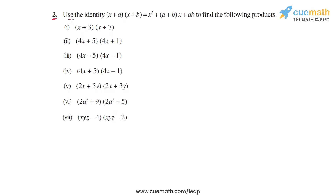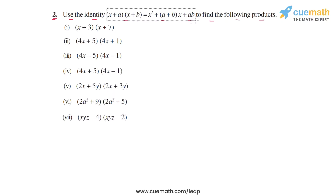In question 2, we have to use the identity (x+a)(x+b) = x² + (a+b)x + ab to find each of the following seven products. Let's observe this identity: when you have a product of the form (x+a)(x+b), which is the product of two binomials where one term is common.